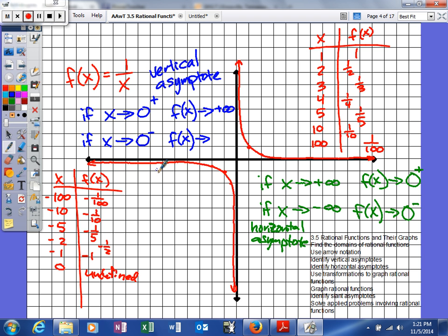Whereas this way, as the x gets closer and closer to 0 coming from the left side, your function is actually going to go to negative infinity. So that's arrow notation. We'll use it more when we talk about graphs.